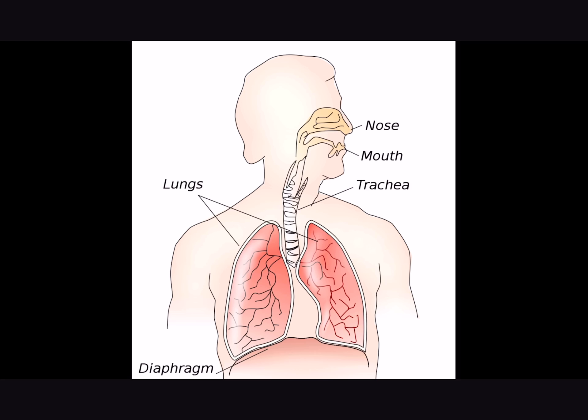So this is the general anatomy of the lungs. We're looking at it like it's a person standing across from us. So this one's the left lung and then we have a right lung, and you can see how it's connected from your mouth and nose through the trachea and into the lungs.